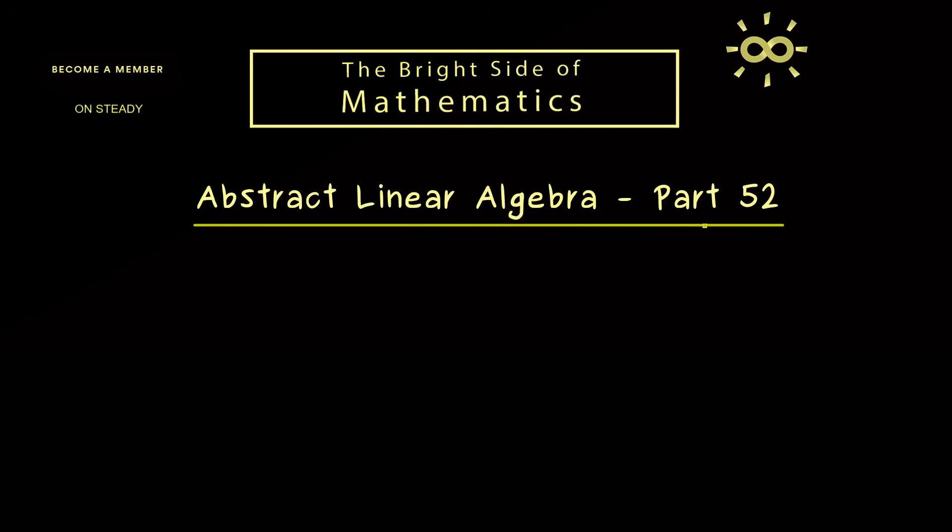And in today's part 52 we look at an application for this, which is also known as a low rank approximation. This means we try to approximate a given matrix by another matrix with a smaller rank.